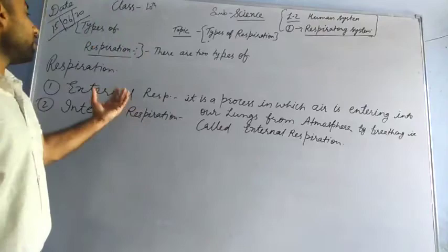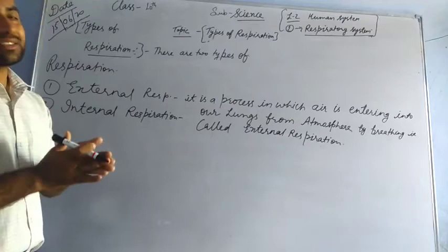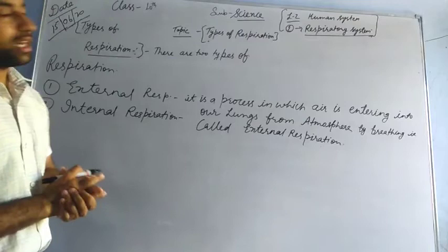So external respiration — clear. External respiration means it is a process in which air is entering into our lungs from the atmosphere by breathing. Breathing is the process by which we are taking the air inside our body. That is called external respiration.